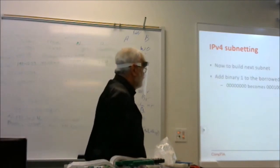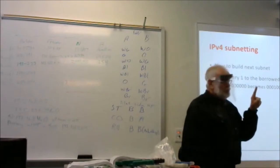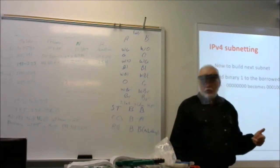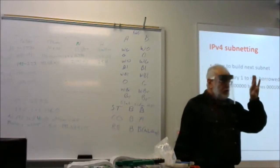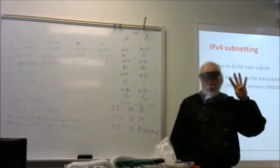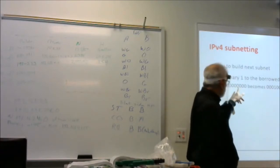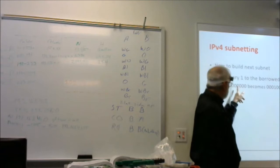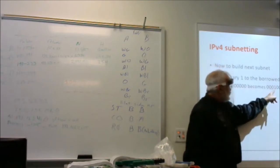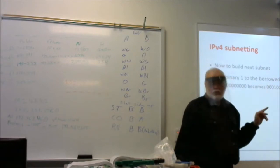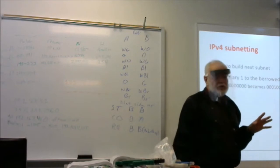Now we want to build the next subnet. To do that, we're going to add one to our borrowed portion. We've borrowed four bits, so we're going to add one to the first four bits. That becomes 0001 in the borrowed portion. Then we build the second row of the table.